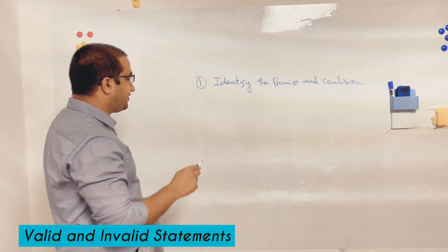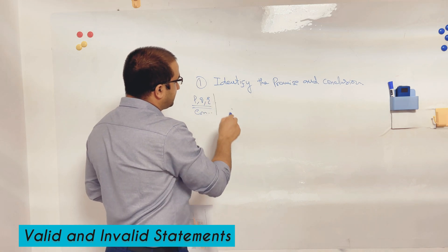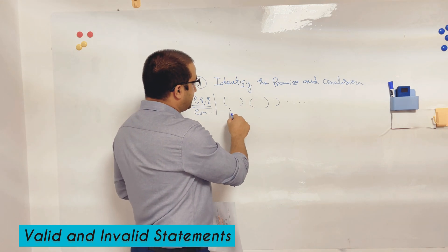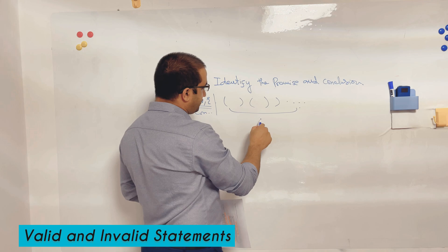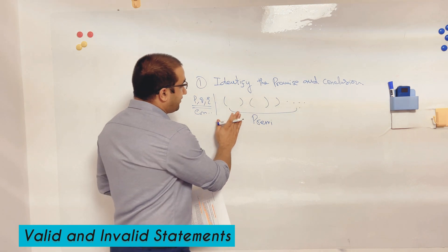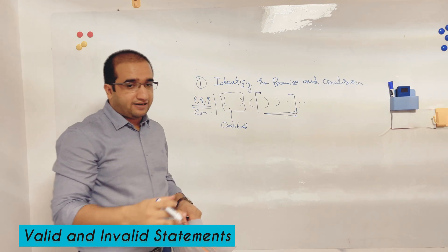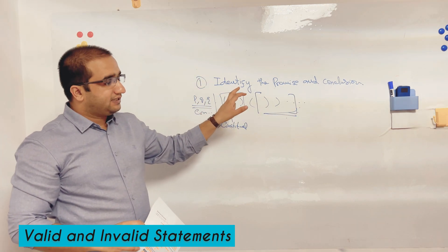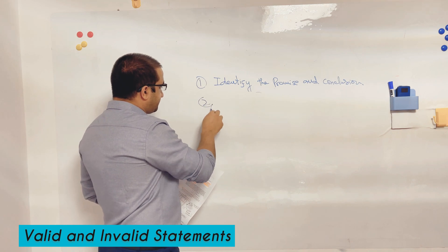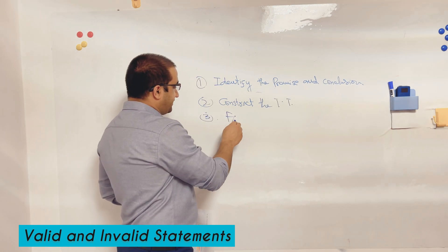P, Q, R are the constituent variables, and then the compound statements given in the question — from these compound statements you identify which are the premises. It is possible that some compound statements may also be treated as constituents, so you have to identify which are the premises for the given conclusion. The second step is to construct the truth table, identifying the critical rows.